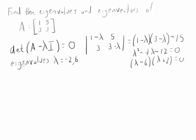All right, for each one of those eigenvalues, we have to find an eigenvector. Let's focus in on lambda equals 6 first — it's the easier case. We want AX equals 6X.